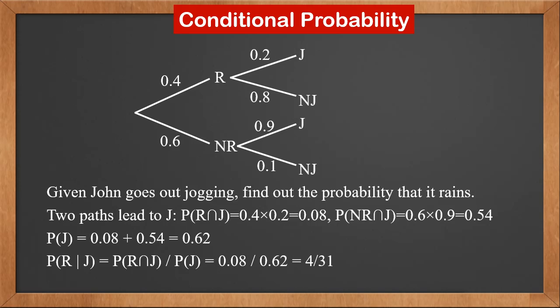Therefore, P(R|J) is P(R and J) over P(J). P(R and J) is 0.08. P(J) is 0.62. So the answer is 0.08 over 0.62, which is 4 over 31.